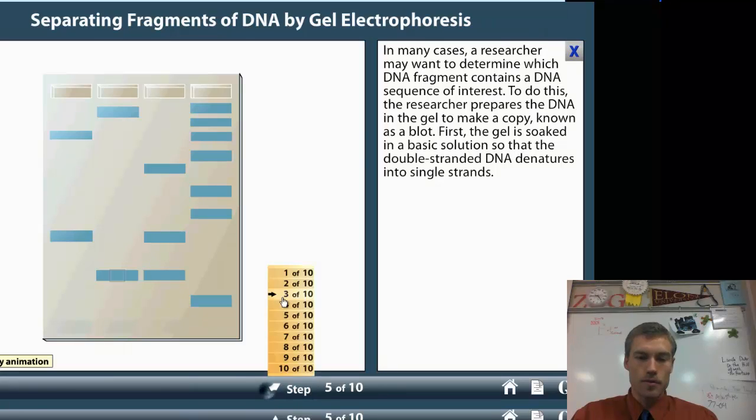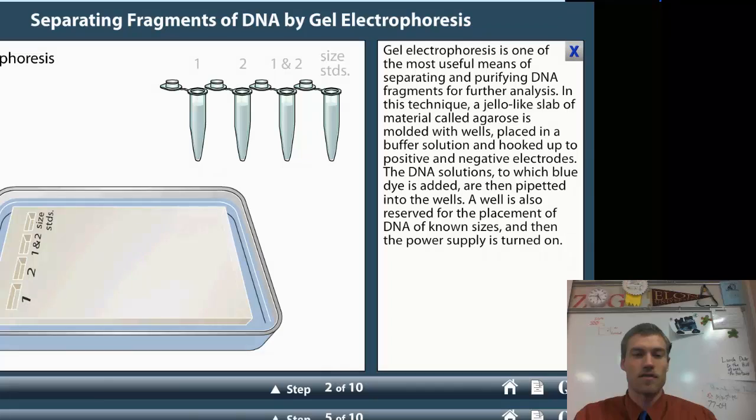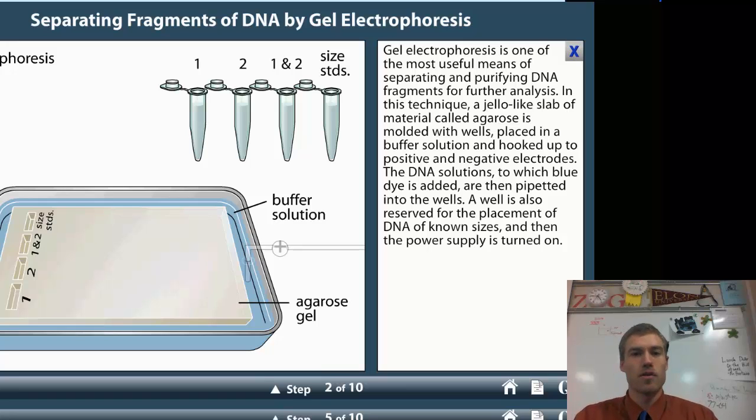So what we've done is that we've taken our restriction enzymes, we've put them into the DNA samples, and we've been able to create different size lengths of DNA. So what we do is we take our samples and we're going to place them into an agarose gel.